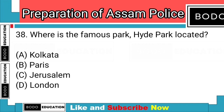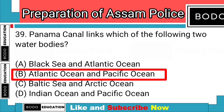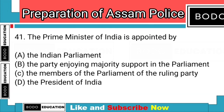Question number 38: Where is the famous Hyde Park located? Answer: Option D — London. Question number 39: Panama Canal links which of the following two water bodies? Answer: Option B — Atlantic Ocean and Pacific Ocean. Question number 40: Who discovered the law of planetary motion? Answer: Option C — Kepler.